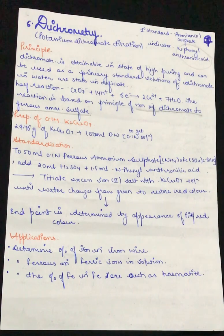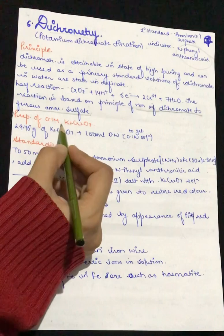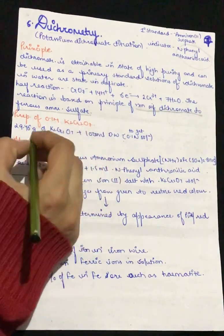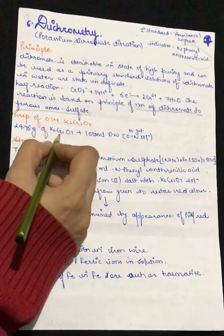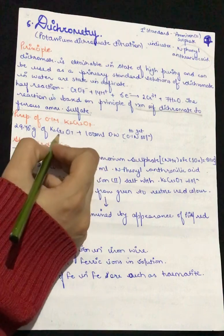First is the reaction of dichromate in the form of potassium dichromate. It is reacting with ferrous ammonium sulfate, and the indicator we are using is N-phenyl anthranilic acid. For preparation of 0.1 molar potassium dichromate, 29.46 grams of potassium dichromate is dissolved in 1000 ml distilled water to get 0.1 normal solution.